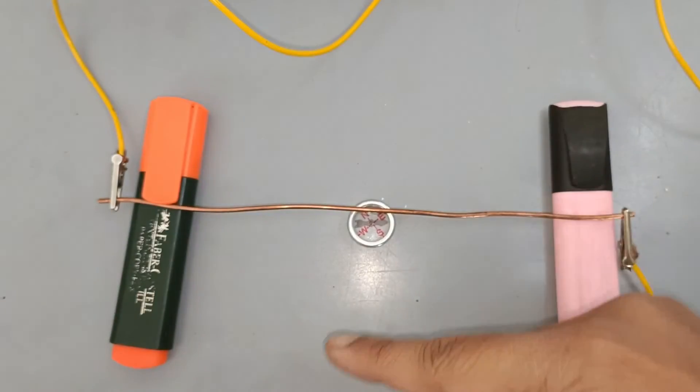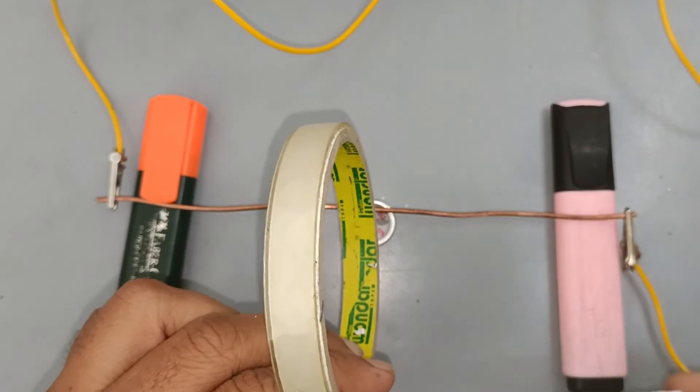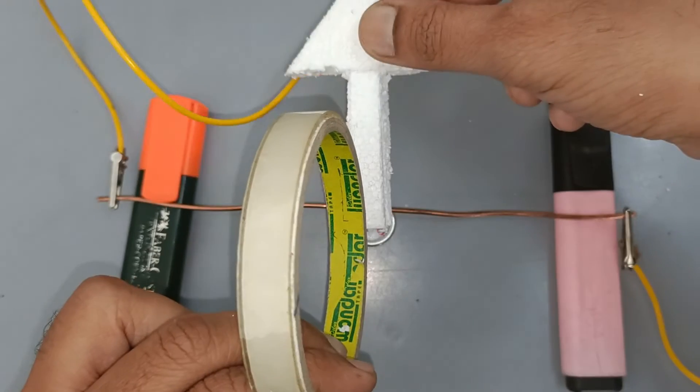As per the right-hand thumb rule, the north of the magnetic needle will align itself in the direction of the field as shown here by an arrow.